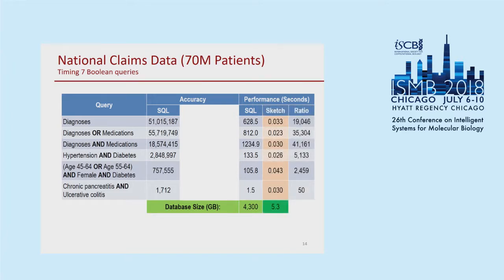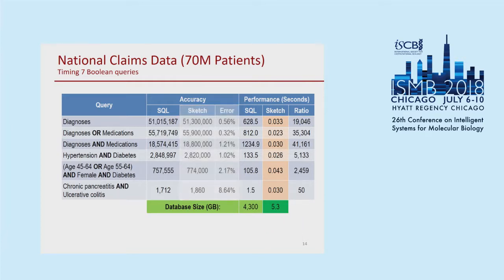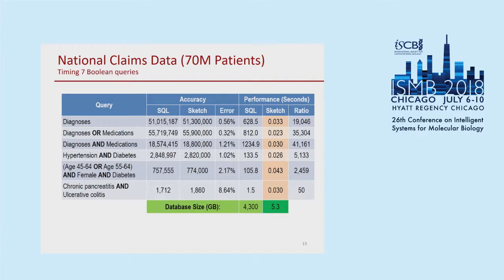Using HyperLogLog plus MinHash, we're able to get queries down to the tens of milliseconds range — many orders of magnitude faster — and also orders of magnitude smaller in size: the entire sketch takes only five gigabytes. Of course, this comes at a cost to accuracy. For most queries using our default parameters, the error is between one and two percent. For the example of chronic pancreatitis and ulcerative colitis, the error rate was much higher. This is controllable and predictable — we can tell the practitioner to expect a higher error rate for that query, so they know to run the full slower query instead.